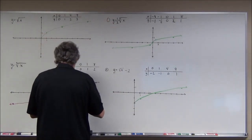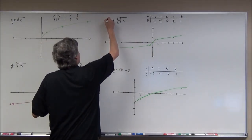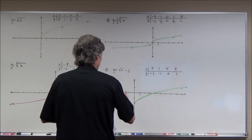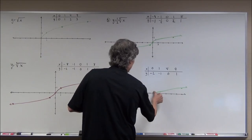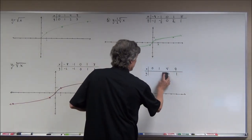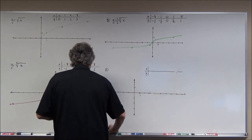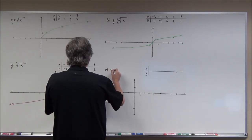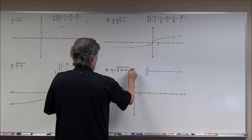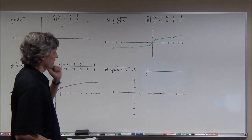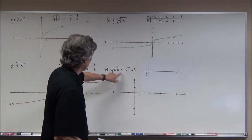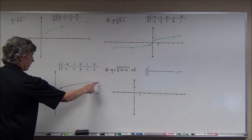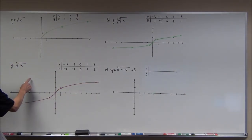Problem 4: y equals the cube root of (x − 4) + 5. The minus 4 inside shifts it 4 to the right, and the plus 5 outside shifts it 5 up. It's as if I take each key point from the parent graph and go 4 to the right and 5 up.